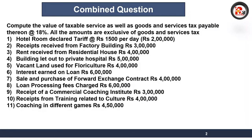This is the combined question of 3 important levels: immovable property, financial services, and commercial coaching — total 11 points. Compute the value of taxable service as well as goods and service tax payable thereon at the rate of 18%. All the amounts are exclusive of goods and service tax. We have 11 points — let's discuss each one.